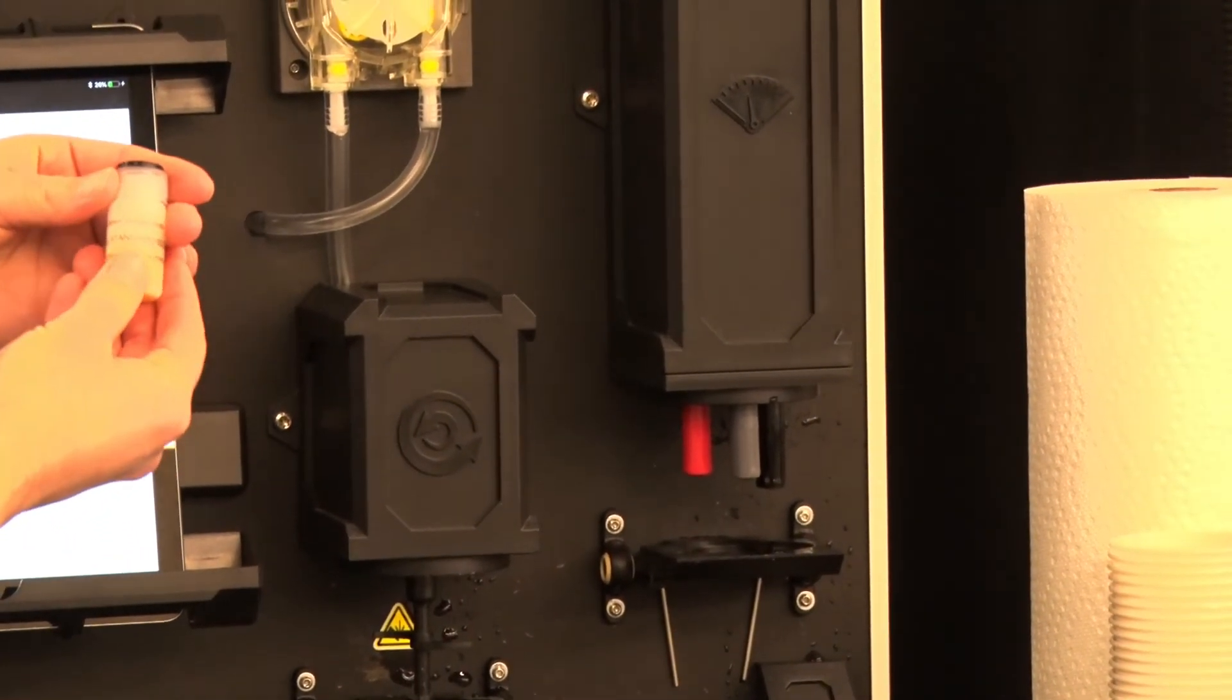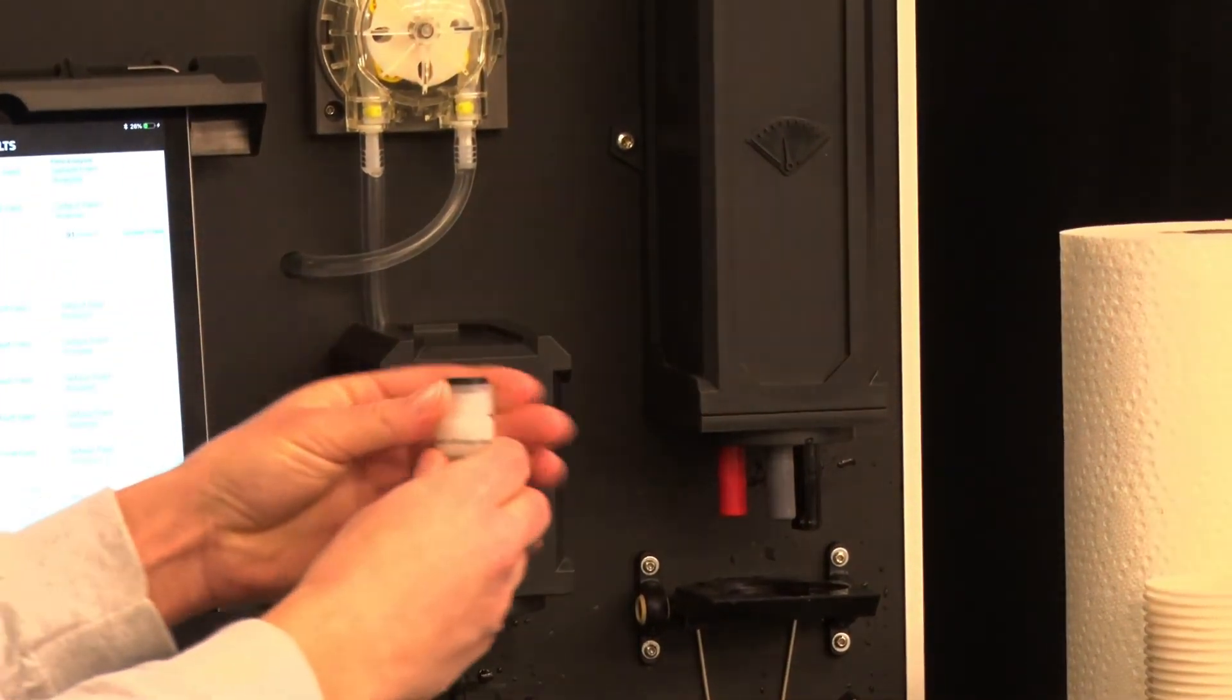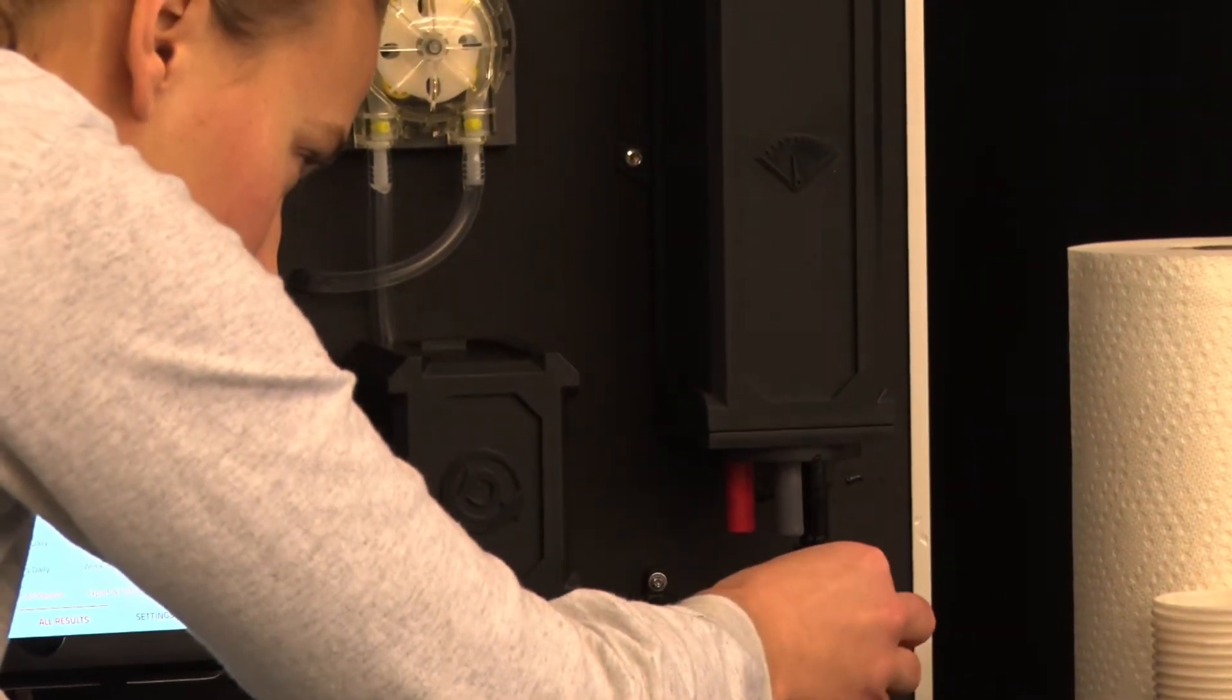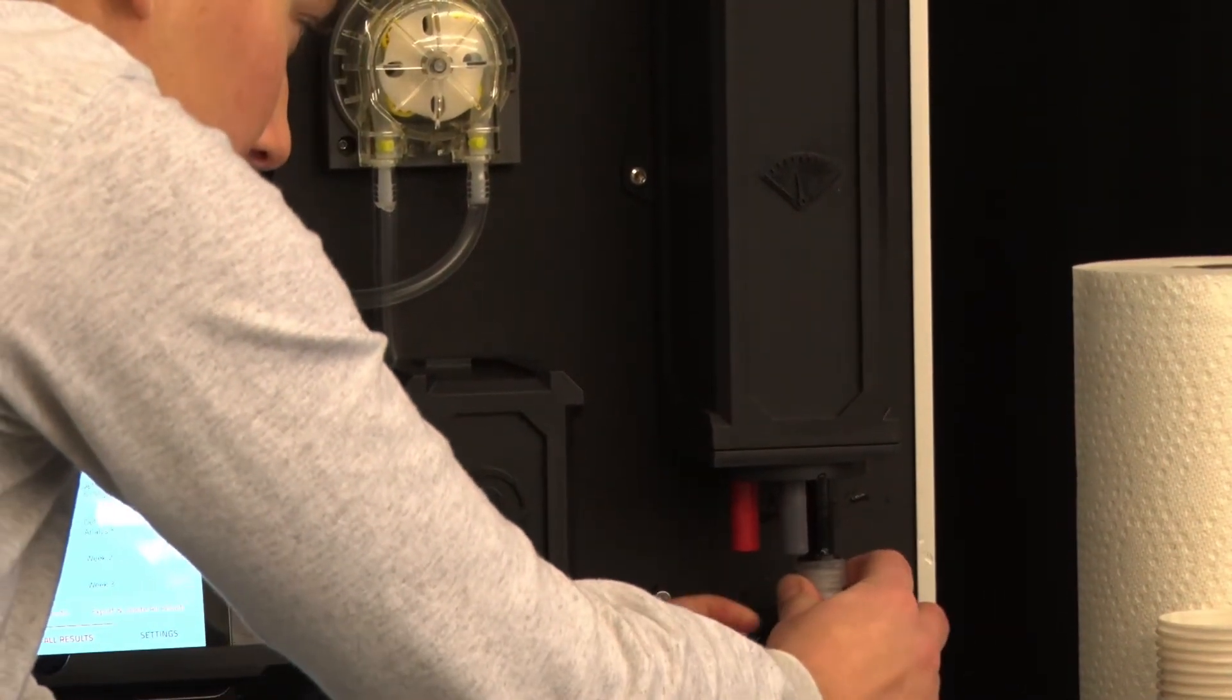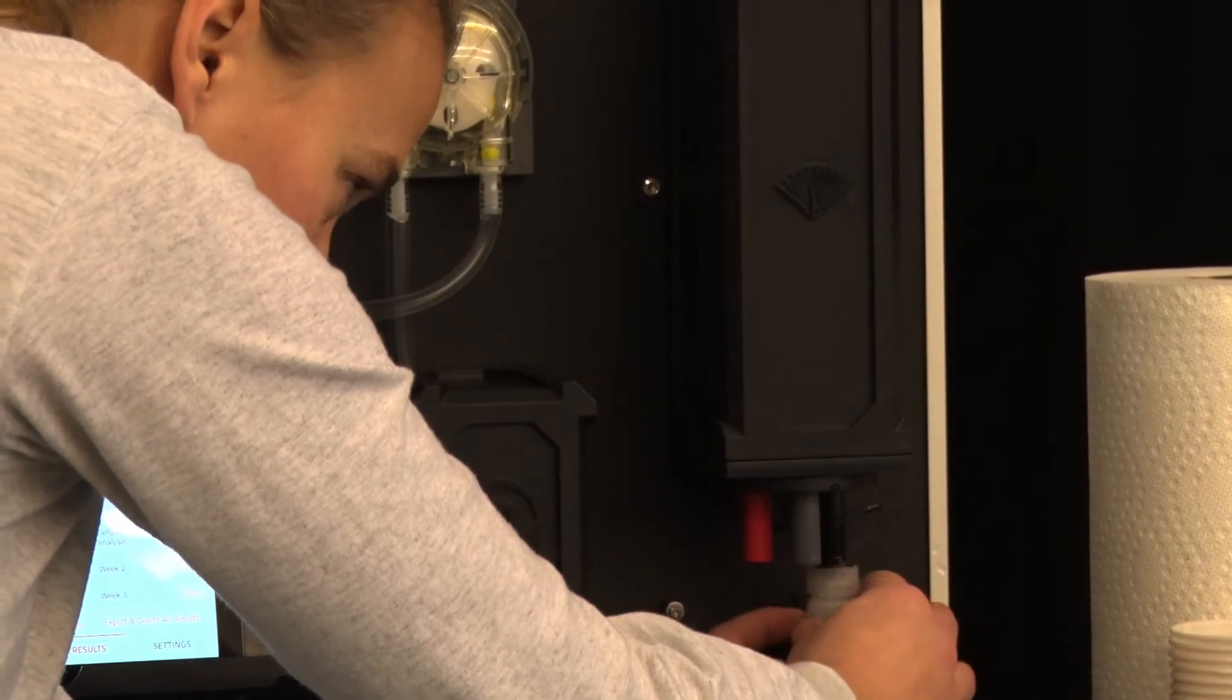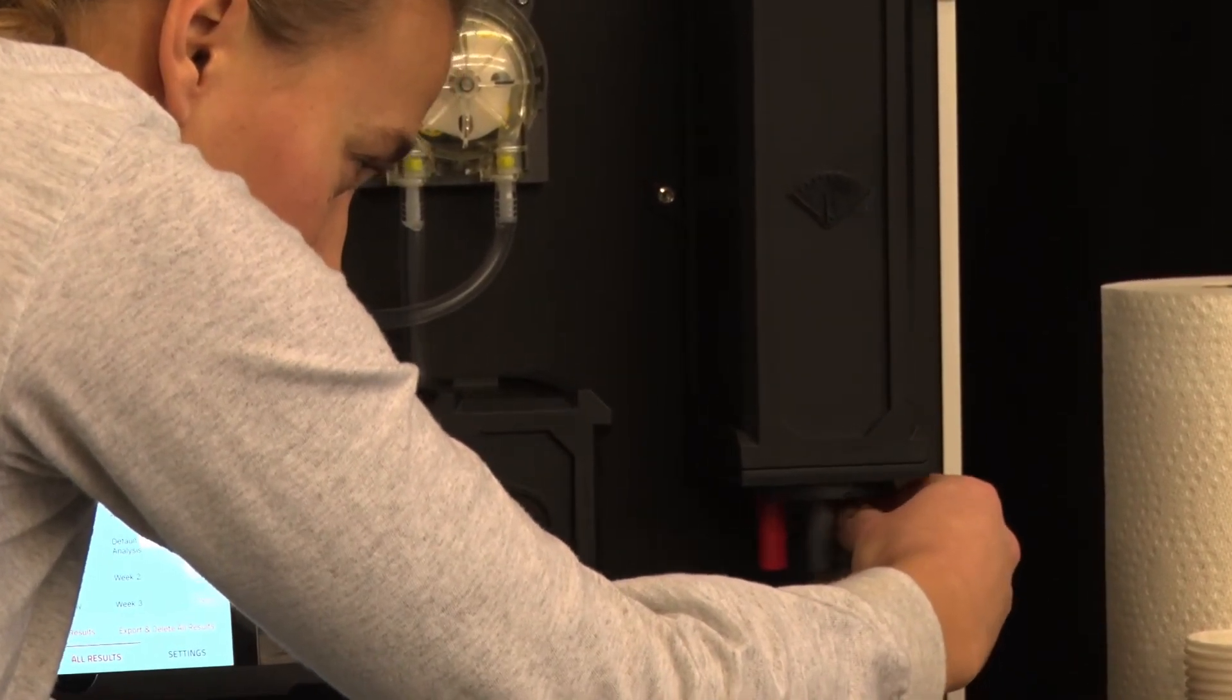To put these bottles on the sensor you want to unscrew the cap a little bit and slide them onto the sensor and tighten the cap.